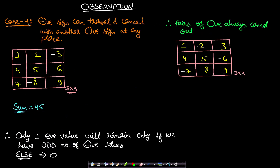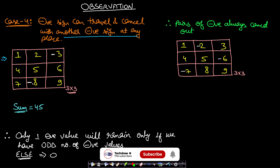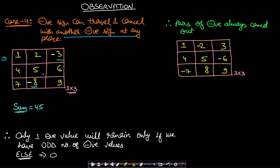Observation 4: the negative sign can travel and cancel with another negative sign present anywhere in the matrix. If we have -8 and -3, these two negatives can cancel out because negatives can travel. Pick -8 and 9, multiply by minus 1. Then pick 6 and -9, multiply by minus 1. Then pick -3 and -6, multiply by minus 1. All numbers become positive and the sum from 1 to 9 equals 45.